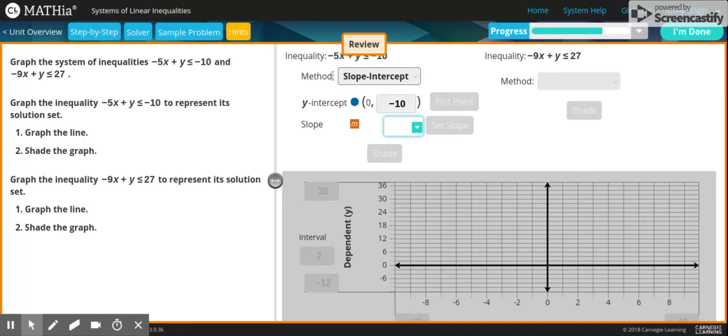If you look at your first inequality here, it's negative 5x plus y is less than or equal to negative 10. Your options here were slope-intercept, two points, or one point on the graph. I chose slope-intercept, I like it the most personally. 0, negative 10 is the y-intercept because negative 10 goes for the y-intercept or anything on this side.